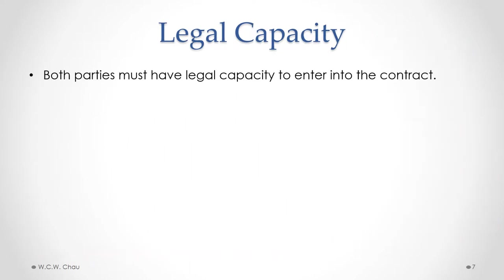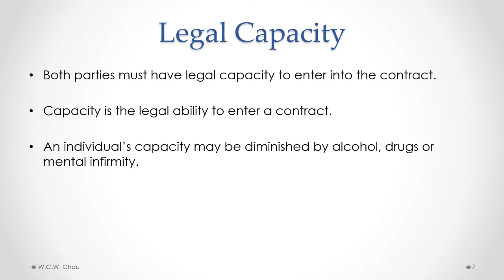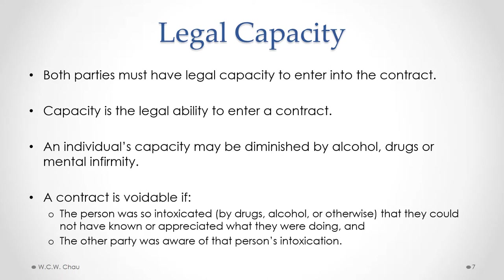To have a legally binding contract, both parties must have legal capacity to enter into that contract. Capacity refers to the legal ability to enter into a contract. An individual's capacity may be diminished by alcohol, drugs, or mental infirmity. The common law rule is that a contract is voidable if the person was so intoxicated — by drugs, alcohol, or other means — that they could not have known or appreciated what they were doing, and the other party was aware of that person's intoxication.